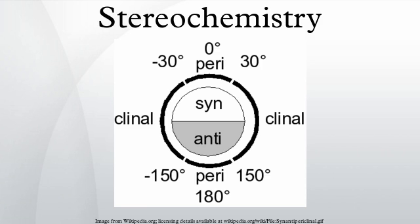Stereochemistry, a sub-discipline of chemistry, involves the study of the relative spatial arrangement of atoms that form the structure of molecules and their manipulation. An important branch of stereochemistry is the study of chiral molecules. Stereochemistry is also known as 3D chemistry because the prefix stereo means three-dimensionality. The study of stereochemistry focuses on stereoisomers and spans the entire spectrum of organic, inorganic, biological, physical, and especially supramolecular chemistry.